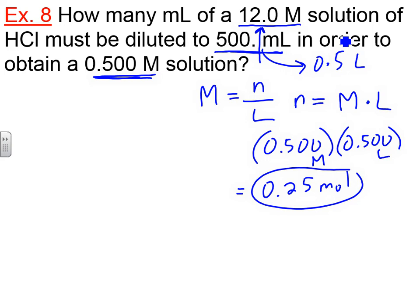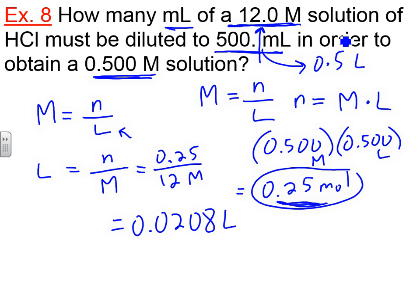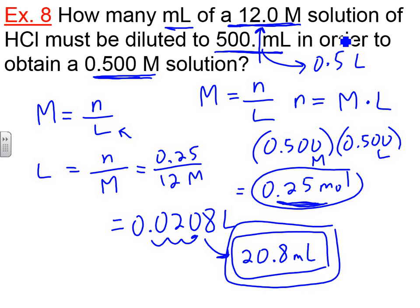The question is how much of the concentrated solution do we take to make the dilute solution? We need to find how much of the concentrated solution gives us 0.25 moles. Molarity is moles over liters, so liters = moles ÷ molarity. Our moles are 0.25 and our original molarity is 12. Dividing 0.25 by 12 gives us 0.0208 liters, which in milliliters is 20.8 milliliters. This is our final answer — we need to pull out 20.8 milliliters of the stock solution.